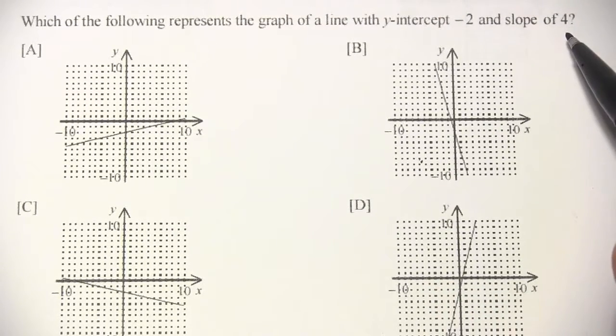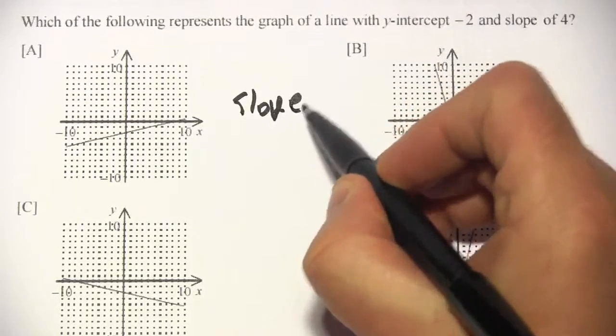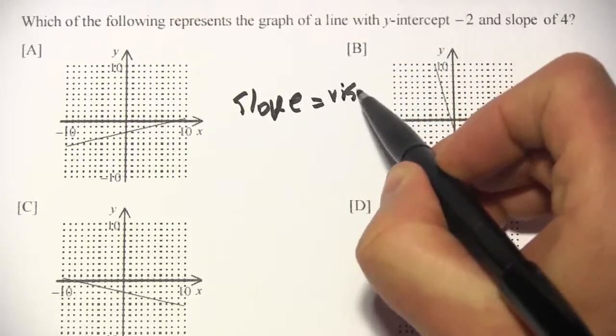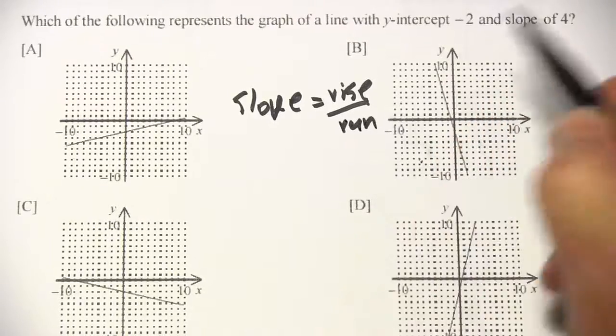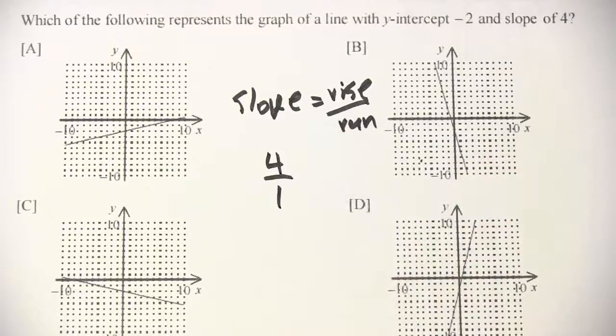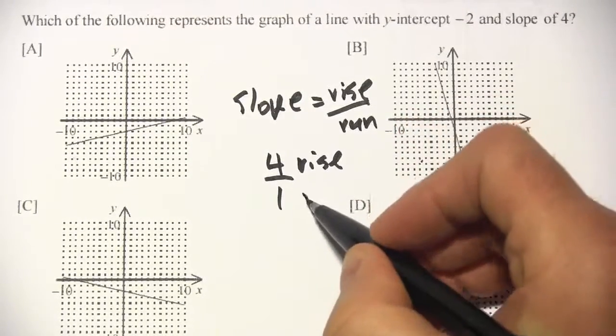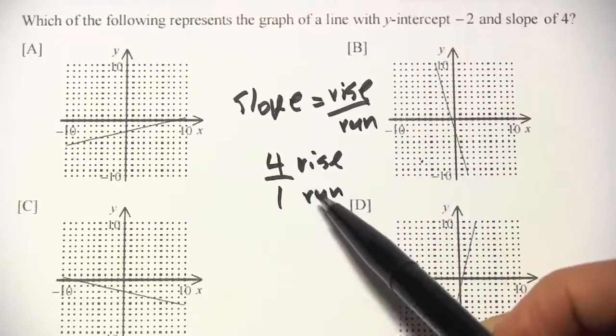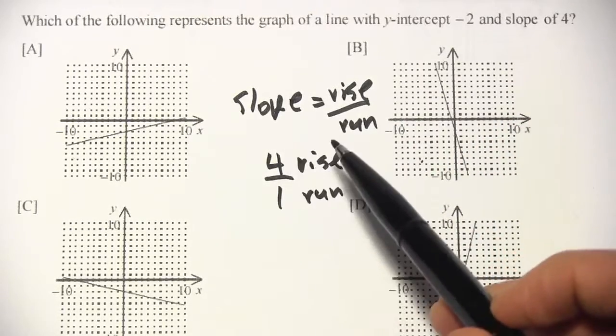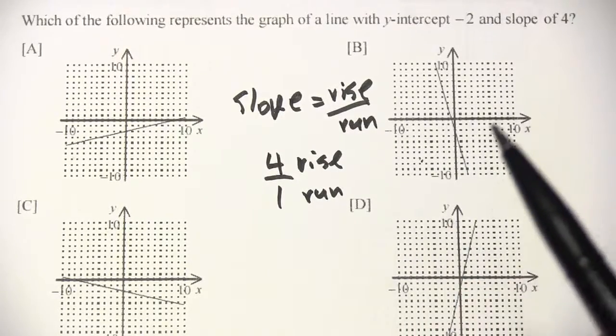But the slope of 4, how can we find the slope of 4? Well, remember, slope equals rise over run. Now, 4 is not a fraction, but we can write it as 4 over 1. So our rise is 4, and our run is 1. What that means is it goes up 4 and over 1, up 4 over 1. So it's going up a lot, and only over a little bit.